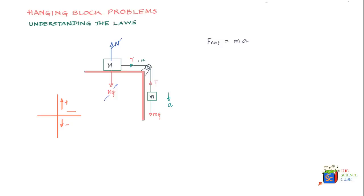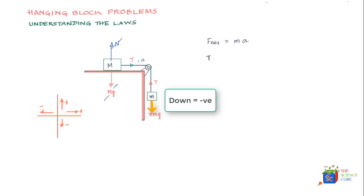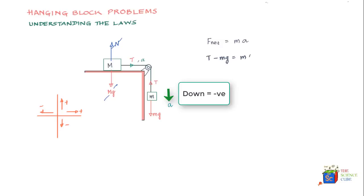Any vector pointing in the right direction is taken as positive, and any vector pointing in the left direction is taken as negative. Remember, this is just a notation — you could reverse it — but for now let's stick to this and write Newton's second law for small mass m. We have tension T acting in the upward direction, so T is positive, and we have force mg acting in the downward direction, so it's minus mg. We equate this with mass times acceleration; since acceleration is in the downward direction, we take it as minus a. So equation 1 is: T − mg = −ma.